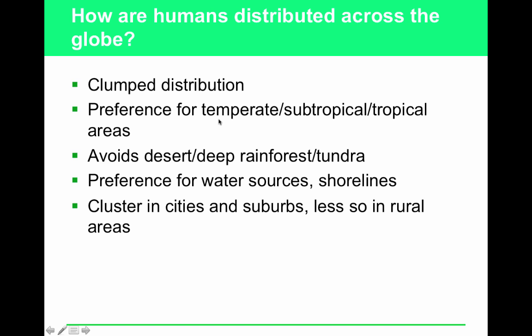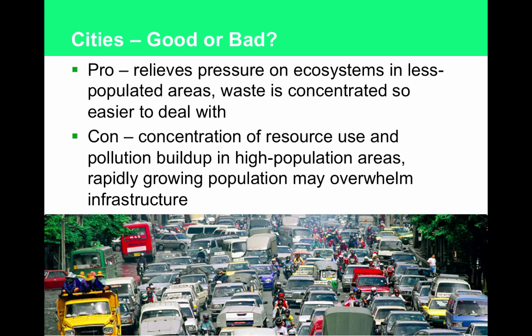We humans are a clumped distribution. We prefer steady climates in temperate, subtropical, and tropical areas. Our lowest population densities are in deserts, deep rainforests, and tundra. We prefer areas with a water source or near shorelines, and we cluster in cities and suburbs. If you did a map of the United States, you'd see the highest population densities in cities or near waterways — we use water for drinking and as a pathway to transport goods. An ecological pro of clumped distribution is that it relieves pressure on ecosystems in less populated areas. The con is concentration of resource use and pollution buildup in high-population areas. The systems we put in place to deal with waste easily get overwhelmed as we rapidly grow.